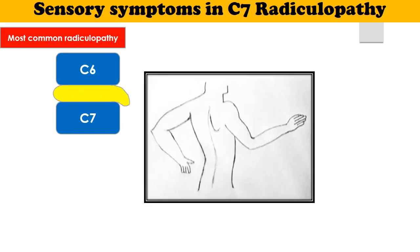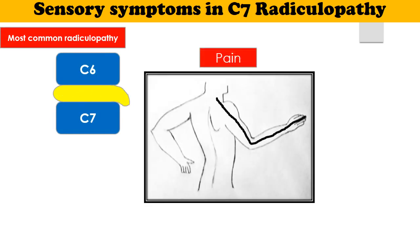The radicular pain in C7 radiculopathy starts in the neck and radiates till the dorsum of the middle finger. The pain is referred to the dorsal forearm, hand, neck, and scapular region.